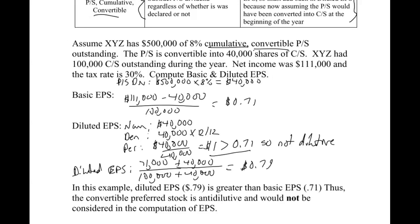So that's convertible preferred stock. The main thing to keep straight is cumulative versus non-cumulative, convertible versus non-convertible, and how that affects basic and diluted earnings per share. We're going to switch gears in the next video and look at stock warrants and options and how they affect dilutive earnings per share. I hope you enjoy it — I'll see you next time.